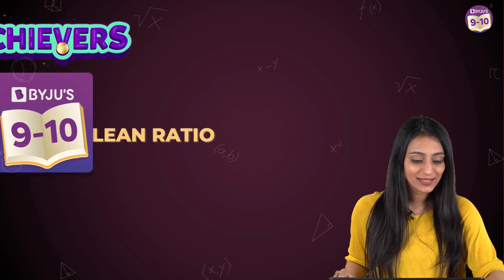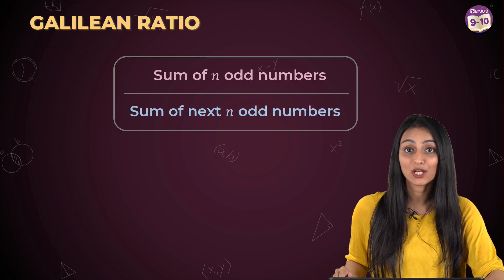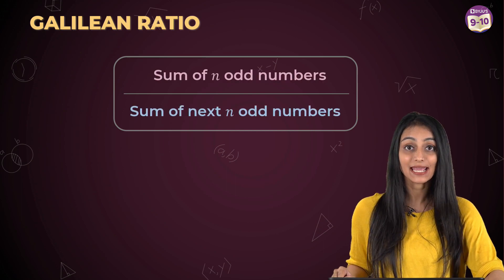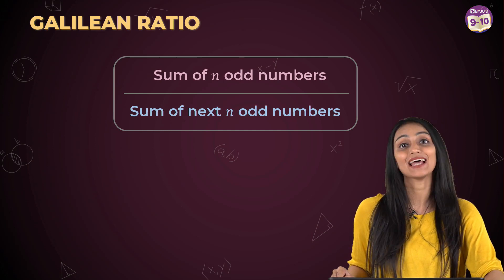So what is it actually? Well to understand that, let's move to the next slide. So it tells us that if we take the sum of n odd numbers divided by sum of next n odd numbers, the answer would always be the same. It's going to be a constant that is 1 by 3.